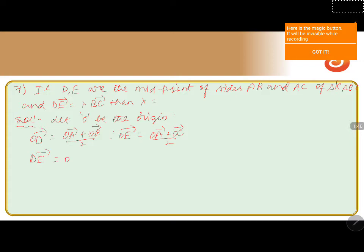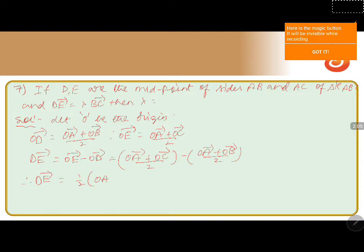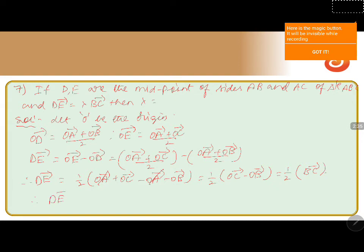Now we want to calculate DE vector. DE vector equals OE vector minus OD vector, which gives us 1 by 2 into OA vector plus OC vector minus OA vector minus OB vector. Therefore DE vector equals 1 by 2 into OC vector minus OB vector, which is nothing but 1 by 2 into BC vector.